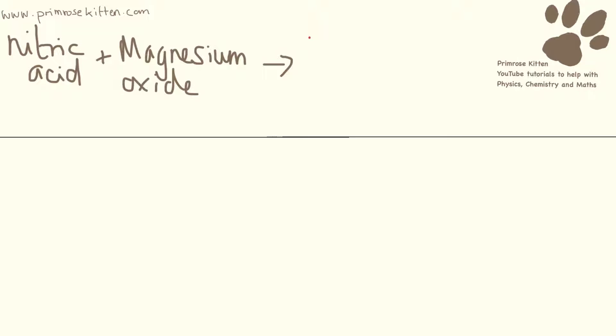And then the last one for you. Nitric acid and magnesium oxide will give us magnesium is our metal, nitrate because we use nitric acid, and water.